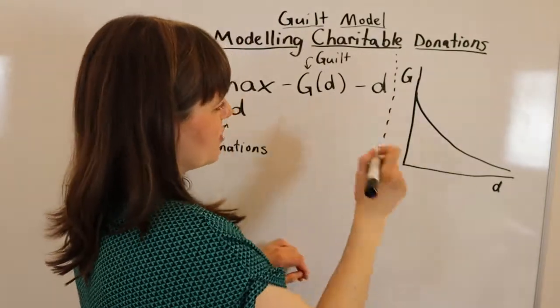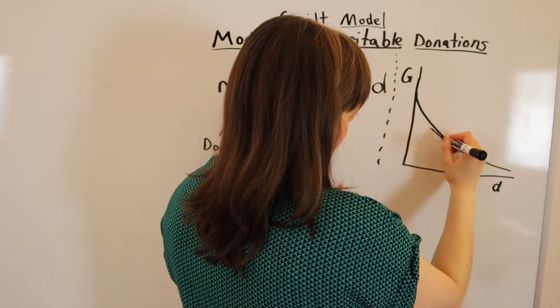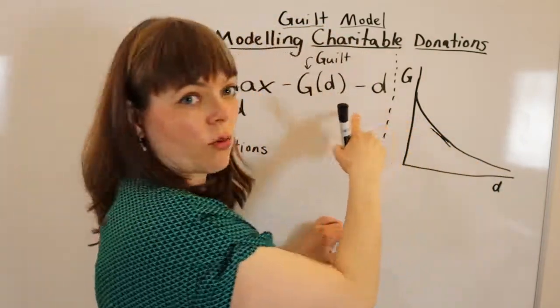Now, of course, if you do the comparative statics, this model is going to be optimized where the tangent of the guilt line is equal to negative 1.